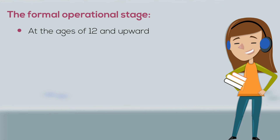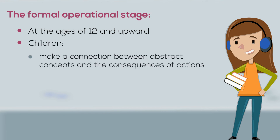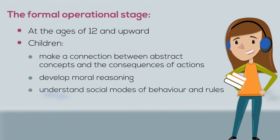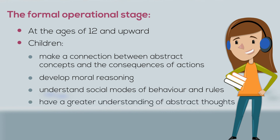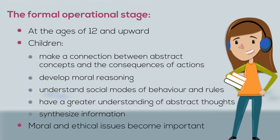The formal operational stage, at the age of twelve and upward, is when children make a connection between abstract concepts and the consequences of actions. They also learn to develop moral reasoning and understand social modes of behavior and rules. At this stage, children have a greater understanding of abstract thoughts, are better at synthesizing information, and the outside world in terms of moral and ethical issues becomes increasingly important.